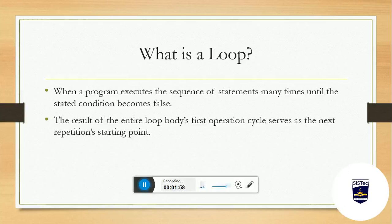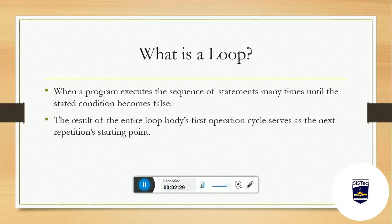तो यह हमारी cycle बार-बार चल रही है। See, when a program executes the sequence of statements many times — मतलब हमारा sequence of statements क्या हुआ है यहाँ पर — सूरज, फिर उसके बाद heat up होना, water heat up होना, water heat up होने के बाद evaporation होना, evaporation होने के बाद condensation होना — तो यह steps हमारे बार-बार चल रहे हैं।